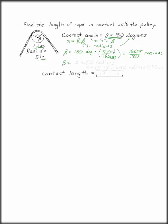Beta is 2.6180 radians. Now remember, you're going to have to keep more than three significant digits until you get to the very end. S is 5 inches times 2.6180 radians or 13.090 inches.